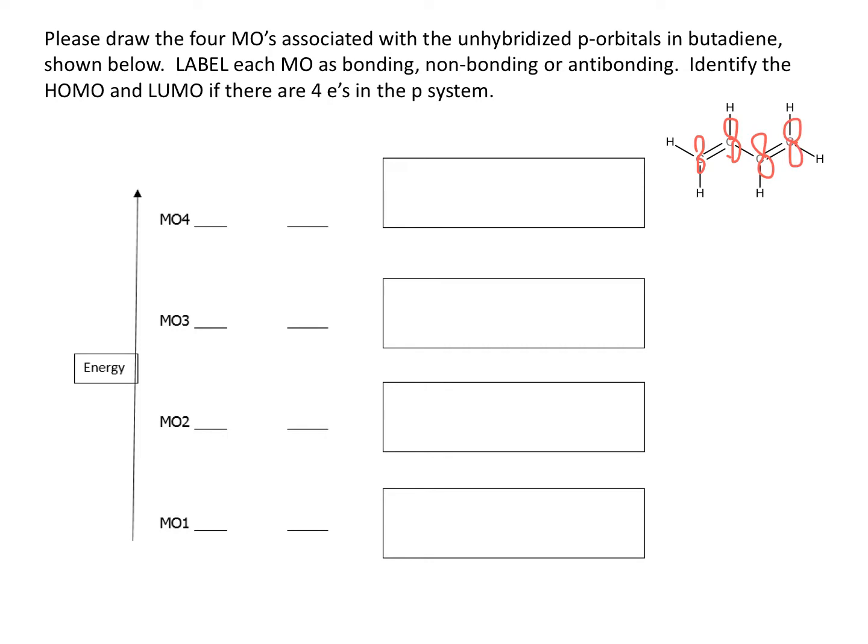Our job is to take these four unhybridized p orbitals and make some molecular orbital diagrams for these. The first thing we want to know is the number of nodes that you have for each MO. So MO1 will have zero nodes, MO2 will have one node, MO3 two, and MO4 three. The number of nodes is N minus one.